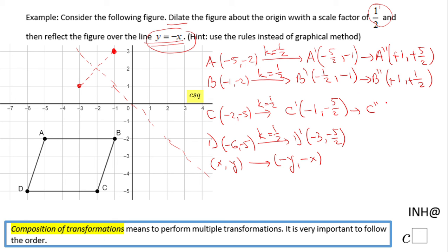C second, I'm going to switch x and y, negative five halves and negative one, and then change the sign. Then D prime becomes D second. Again, switch the x and y and then change the sign. If those pluses bother you, you can erase them because we don't really need them. So now we have the final answer for our problem. We did dilation and reflection.